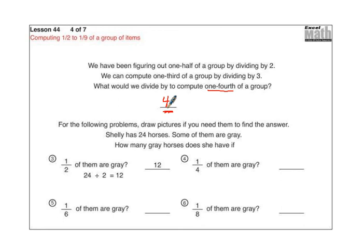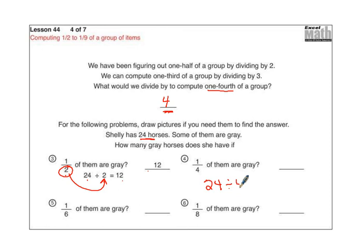She only has 24 horses. Some of them are gray. How many gray horses does she have if half of them are gray? If half of them are gray, we're dividing by 2. 24 divided by 2 is 12. What about if 1 fourth of them are gray? That means 24 divided by 4, and 24 divided by 4 is 6 — 6 of them would be gray.